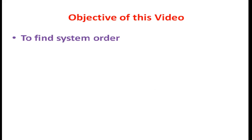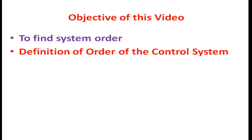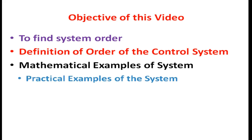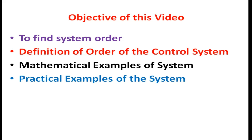Now we discuss the objectives of this video. First, to find the system order. Second, the definition of the order of the control system. Third, a mathematical example of the system. And lastly, a practical example of the system.